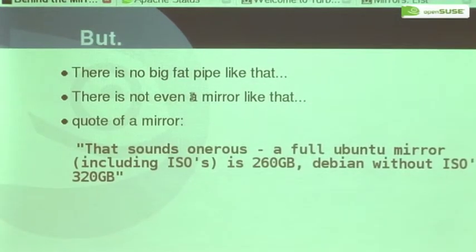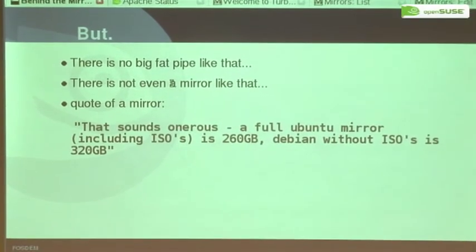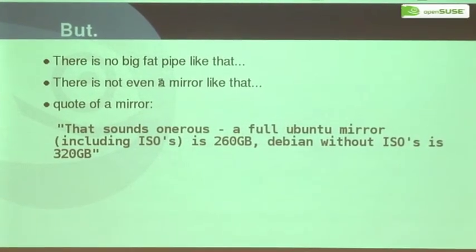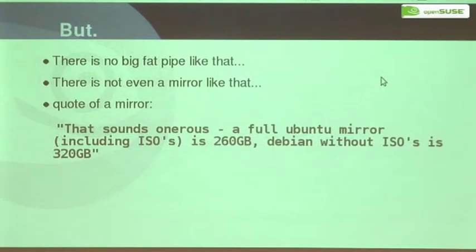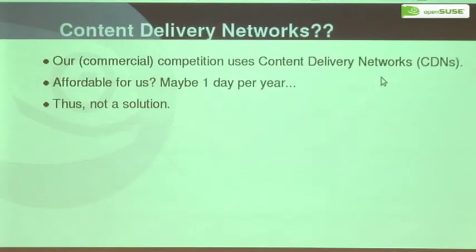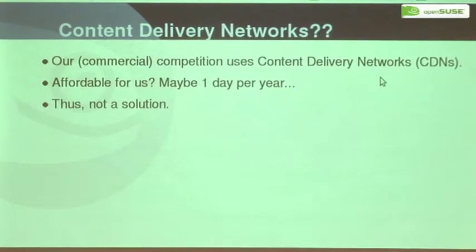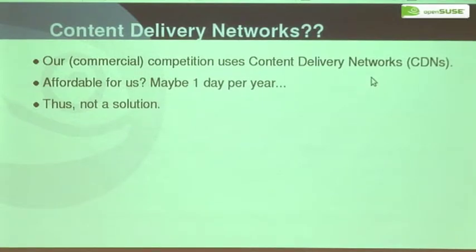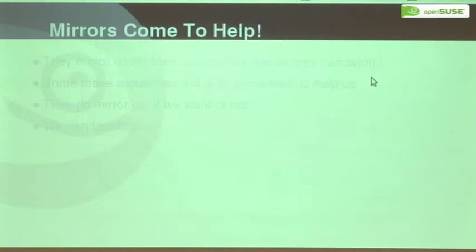The problem is there is no single big fat pipe which can handle that — nobody has such internet connectivity. There also isn't a mirror which can handle that much stuff. I have a quote from a mirror which basically says, 'Isn't that a bit heavyweight? Debian and Ubuntu is just 200 gigabytes.' The commonly used solution is employing a content delivery network. There are lots of them and they can handle it, but they are very expensive — not a solution for us. So we need some kind of poor man's CDN.